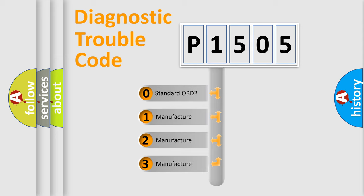If the second character is expressed as zero, it is a standardized error. In the case of numbers 1, 2, or 3, it is a manufacturer-specific error.